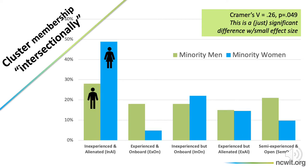Now let's look at minority students by gender. We see a statistically significant difference in cluster membership between minority women and minority men, but it has a fairly small effect size. Similar to white women, just shy of half of the minority women are in the inexperienced and alienated group, but fewer minority women compared to white women are in the on-board groups. More minority men than white men — a bit more than a quarter — are in the inexperienced and alienated group, but more than a third are on-board with or without experience. There are minority men and women in all of these groups.